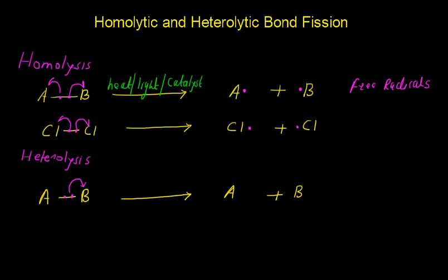But in this case, both electrons will go on B. So automatically it will carry negative charge and this A will become electron deficient. It means that there is formation of ions takes place in case of heterolysis.